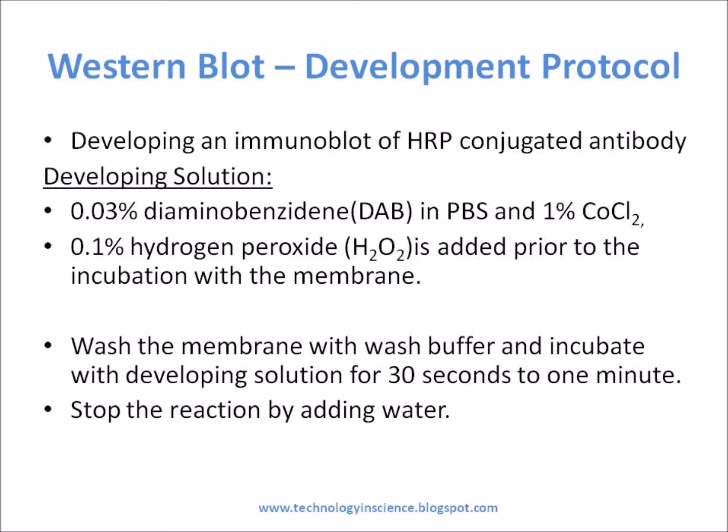Developing an immunoblot of HRP-conjugated antibody is explained here. The developing solution is made by dissolving the substrate 0.03% diaminobenzidine in PBS and 1% cobalt chloride. To this, 0.1% hydrogen peroxide is added prior to the incubation with the membrane.